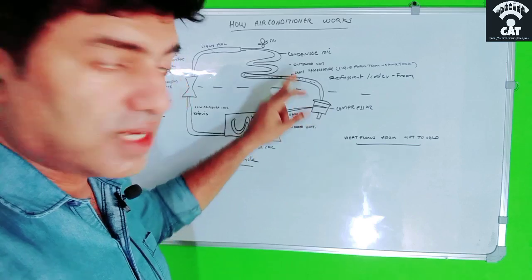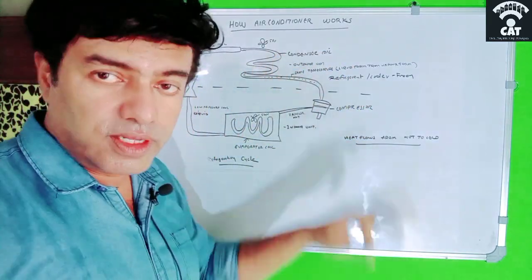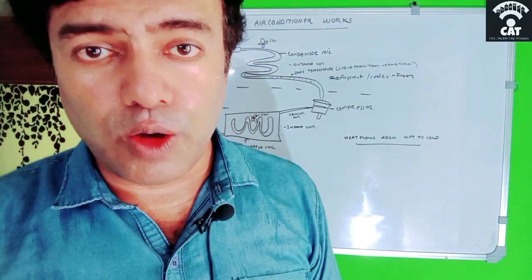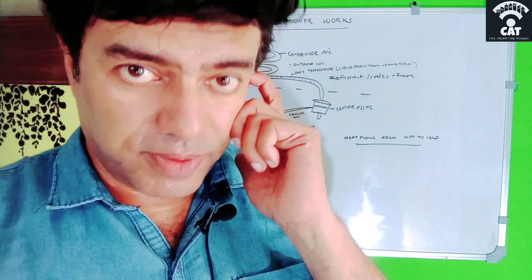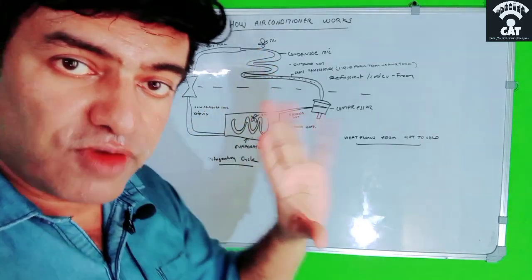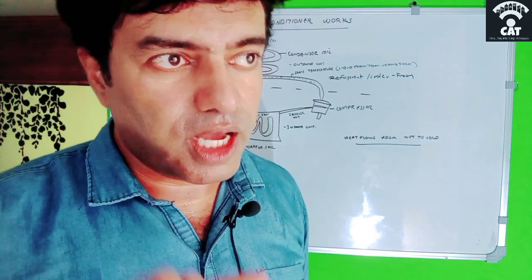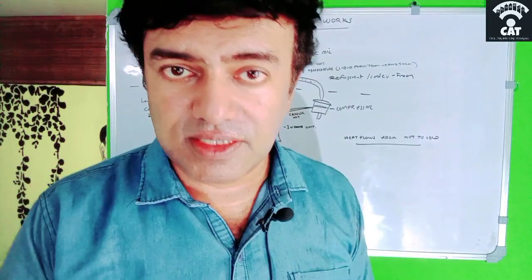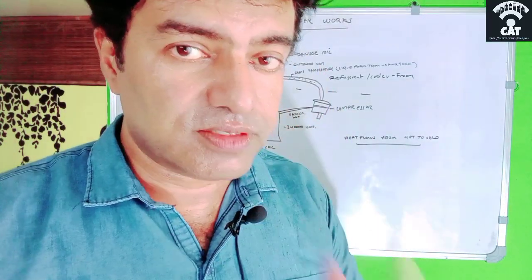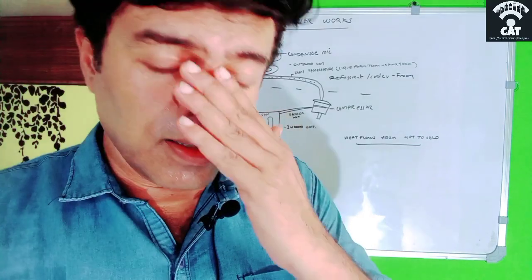After the refrigerant attains high temperature and high pressure, it passes to the condenser coil, which is in the outside unit. When it passes through the condenser coil, it exchanges heat to the outside air. There is a fan here — when the fan runs, heat is exchanged from the condenser unit to the outside atmosphere, which is always at a lower temperature than the refrigerant.